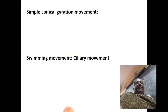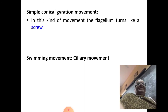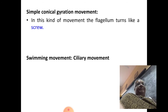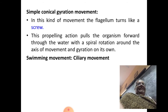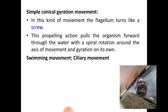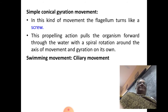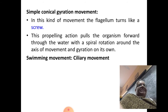Other than this, there is also simple conical gyration movement. In this kind of movement, the flagellum turns like a screw — not the bending movement, it actually turns like a screw. This propelling action pulls the organism forward through the water with a spiral rotation around the axis of movement, and the organism gyrates on its own. This is all about flagellar movement as exhibited by Euglena or Chlamydomonas.